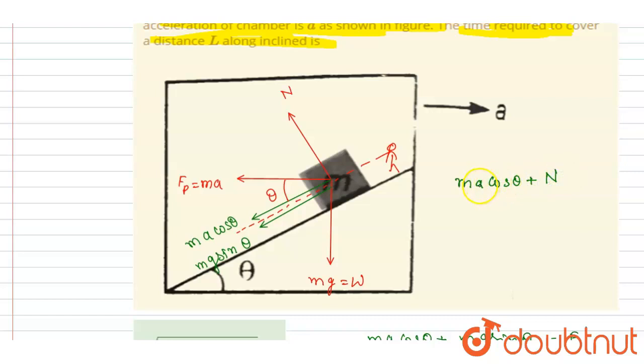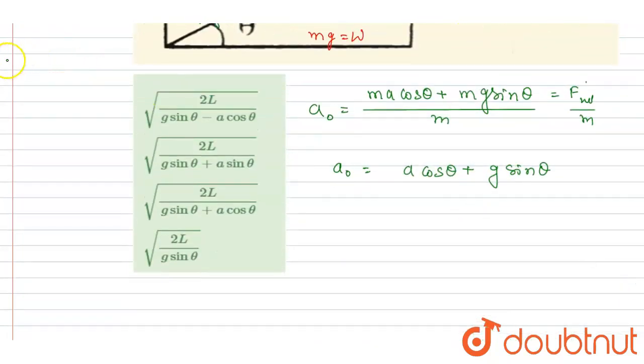It will be ma with a negative sign, mg cos theta plus ma sine theta is equal to zero. Net force perpendicular to the incline is zero. So moving toward this, we...